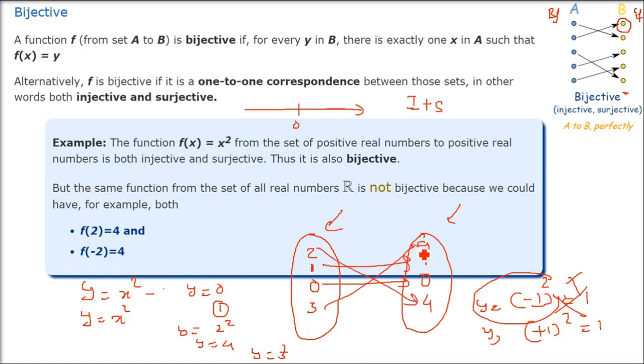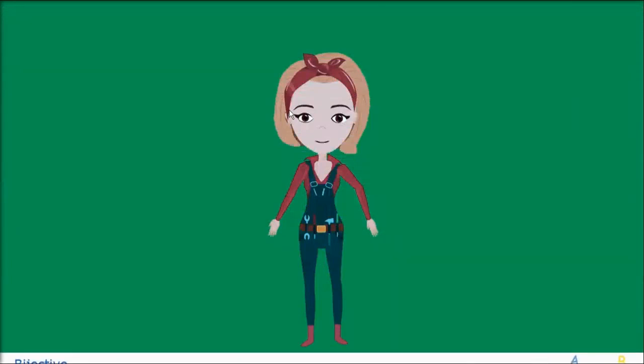There is one-to-one relation only, and no one is left in this set which is the second set, the girlfriend set. Multiple x for one y is not there.